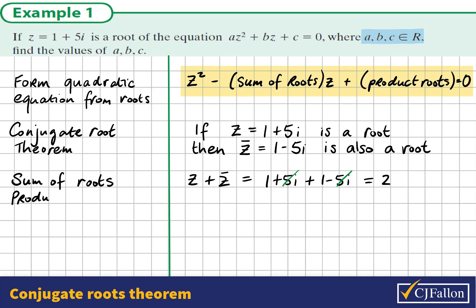The product of the roots: If we multiply z by its conjugate, we get the difference of two squares. We have 1 plus 5i multiplied by 1 minus 5i. This equals 1 squared minus 5i squared. 1 squared is 1, and 5i squared is negative 25, because i squared is negative 1. Altogether this is 26.